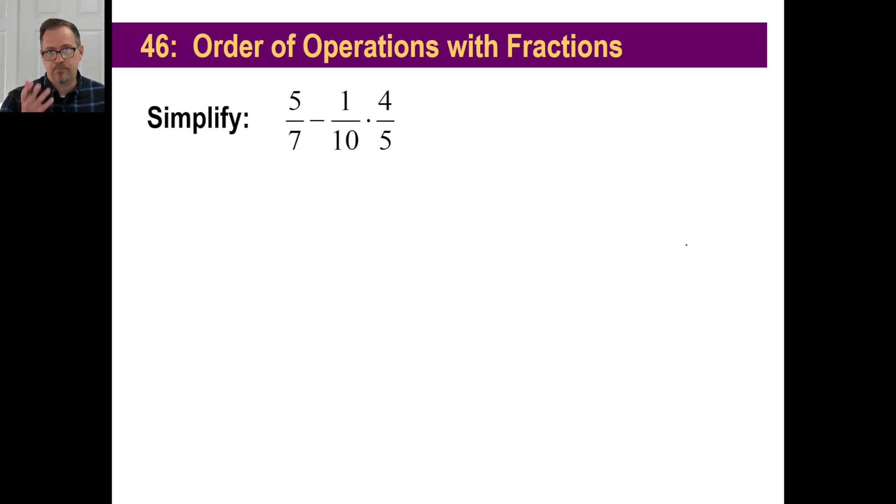Try another one. Go ahead and pause and copy this down. Same old thing here. We're going to do this part first. Again, I would cancel this before I did anything. So take the ten and the four—two goes into ten five times and then two goes into four two times. So this turns into five sevenths minus, and one times two is two and then five times five is 25.